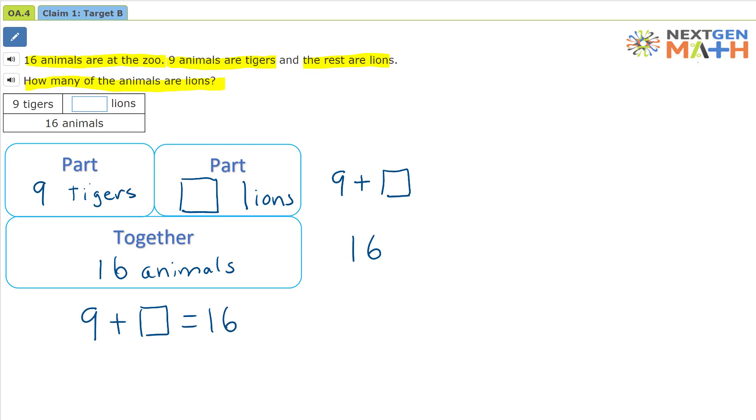So one way we can solve it is to use our double 10 frames. And so for tigers, tigers are going to be yellow. So let's put 9 tigers here. 1, 2, 3, 4, 5, 6, 7, 8, 9. And let's put numbers on them too.